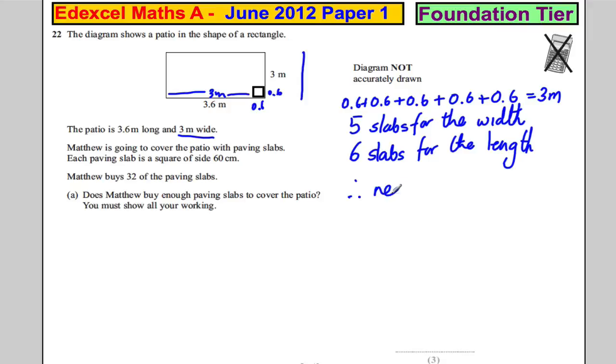Therefore, he needs 6 across and 5 up. So he needs 30 slabs overall. And the question is, does he buy enough? Yes. He has 2 spare if he buys 32. And we're done.